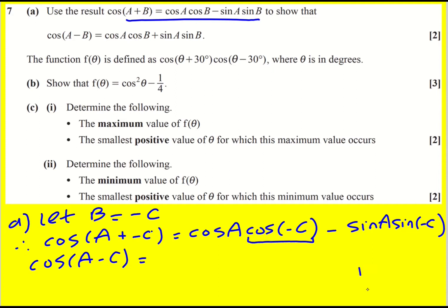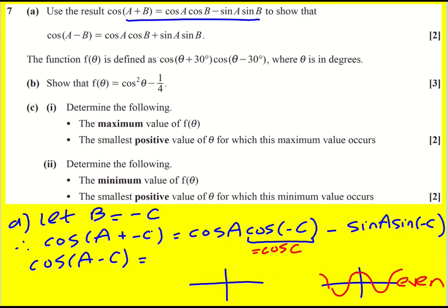Now here's the thing: cos of minus c — cos is symmetrical about the y-axis. If you do a reflection in the y-axis, which is what is happening here, then you get the same thing. It's actually called an even function. Just be aware that it's actually equal to cos(c). It's really helpful to know your graphs to do this. You can alternatively just try values out, but knowing this is going to be crucial.